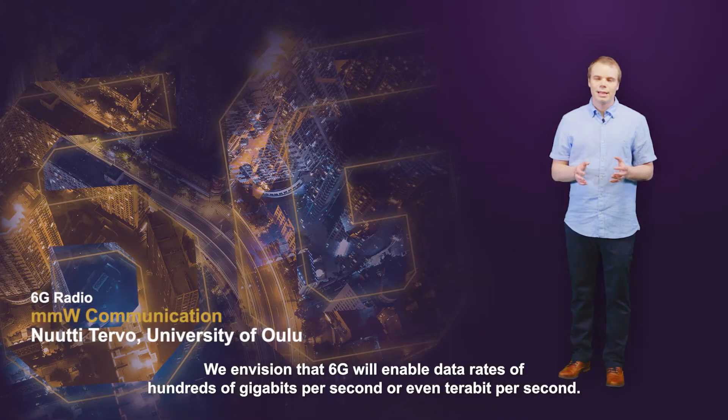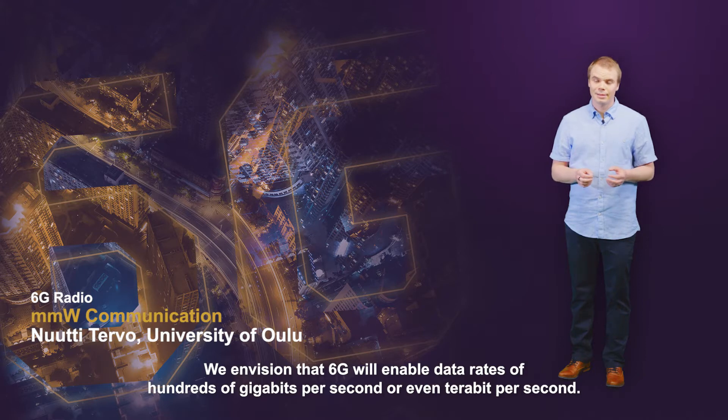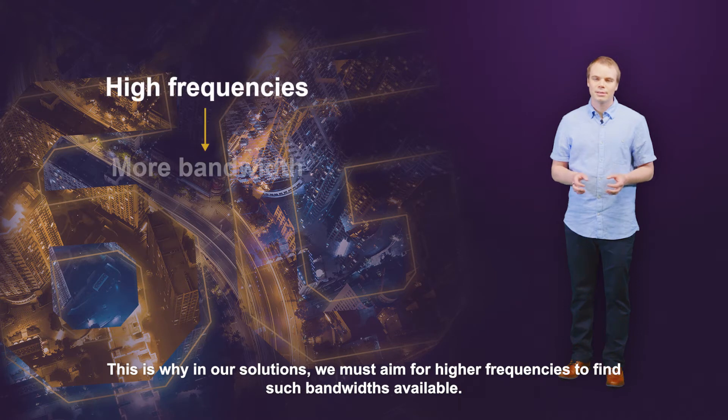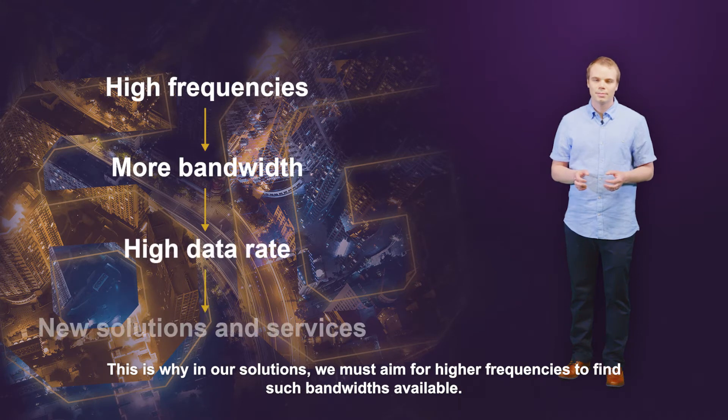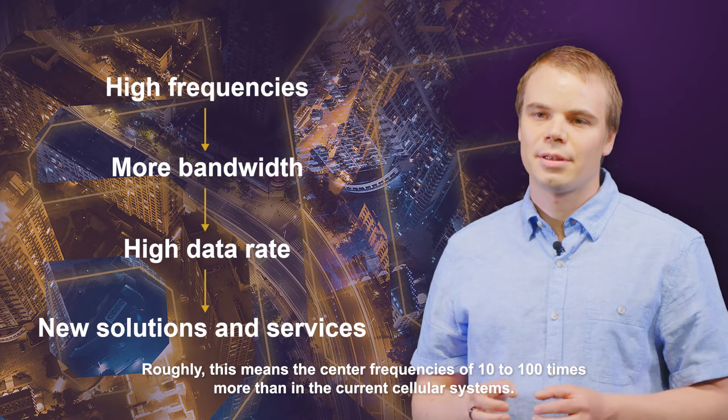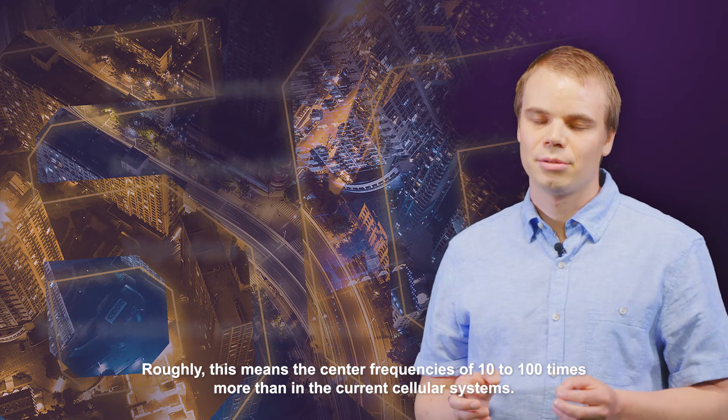We envision that 6G will enable data rates of hundreds of gigabits per second or even terabit per second. This is why in our solutions we must aim for higher frequencies to find such bandwidth available. Roughly this means center frequencies of 10 to 100 times more than in the current cellular systems.